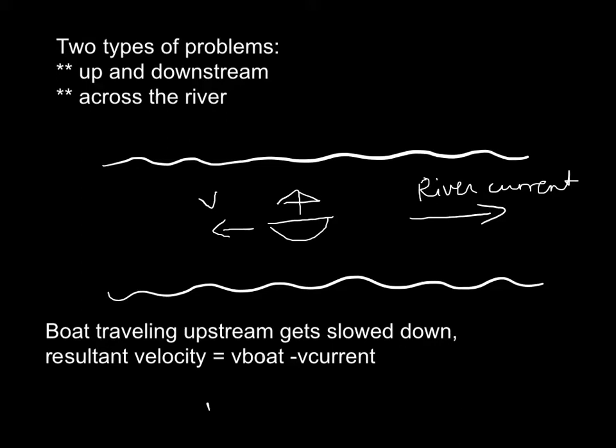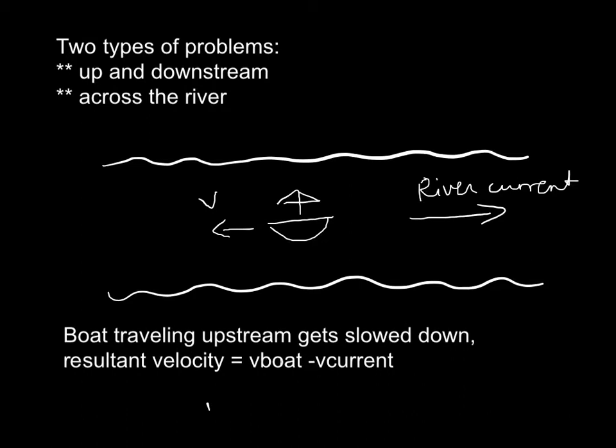If we're going upstream, then our boat obviously is going to get slowed down. So the velocity that we see the boat have, that's what we see the boat go up the stream with, is the boat's velocity minus the current's velocity, because that's how much it's going to slow it down.